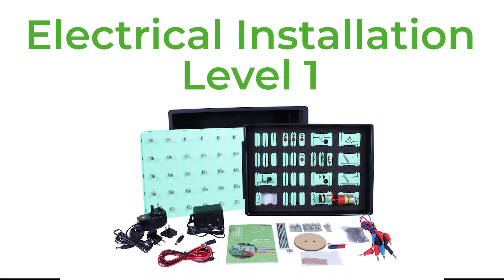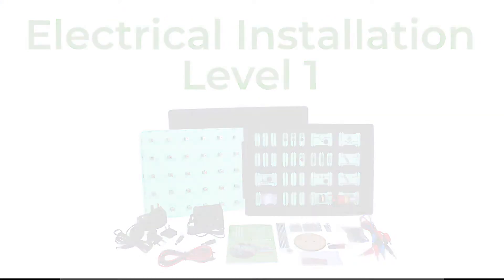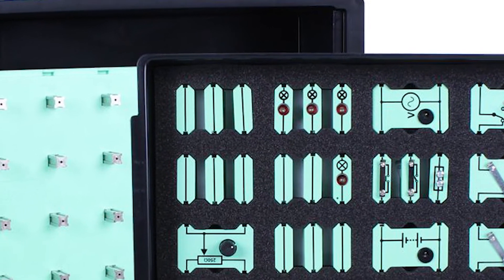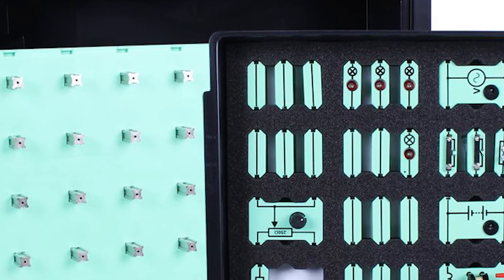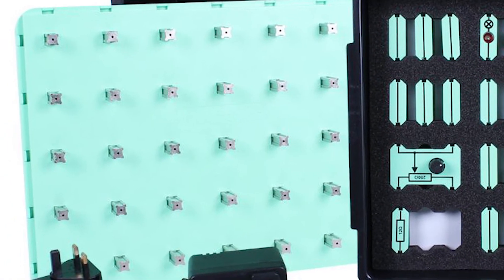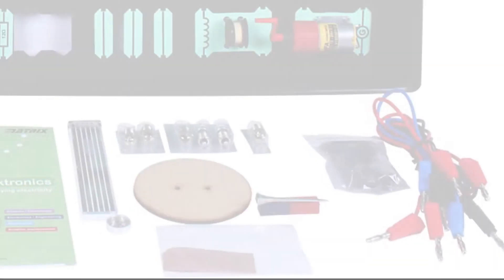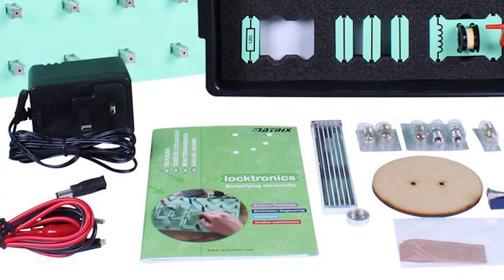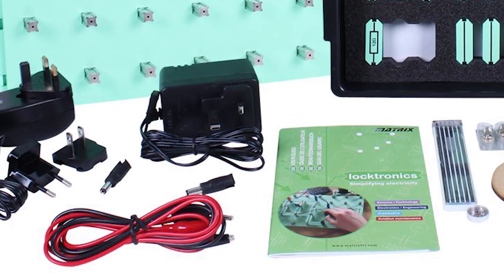The first kit we offer at level one is the electrical installation level one kit. This kit assumes no prior knowledge of electricity and it covers basic things like electron flow theory, simple units of electrical measurement, how to use multimeters, the effects of an electric current, simple electrical calculations, AC and DC supplies, and simple electrical circuits.